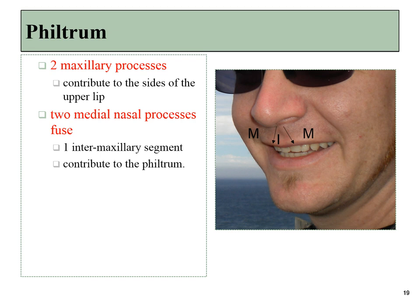So to summarize: the upper lip is formed by the two maxillary processes off to the sides, and the intermaxillary segment, which forms the philtrum.